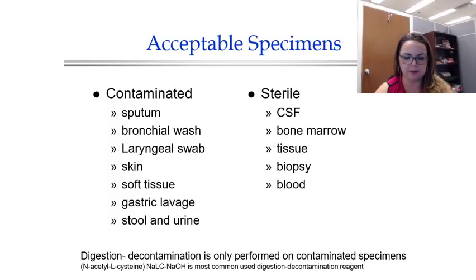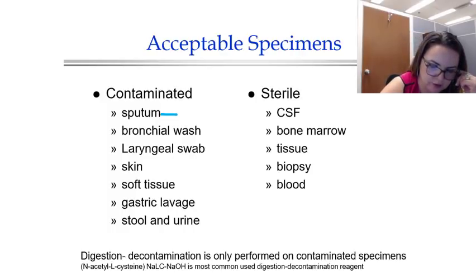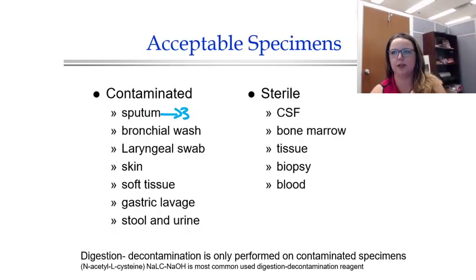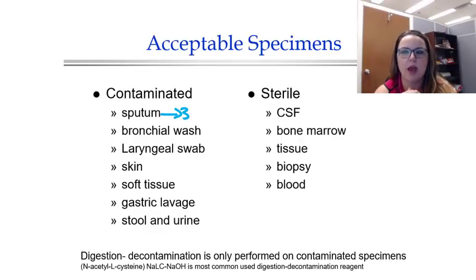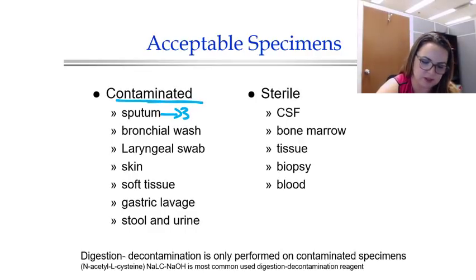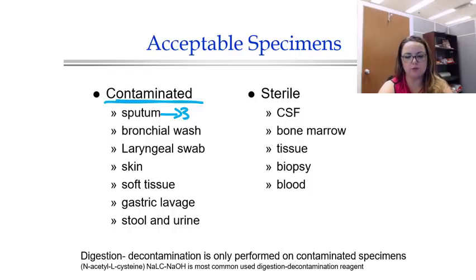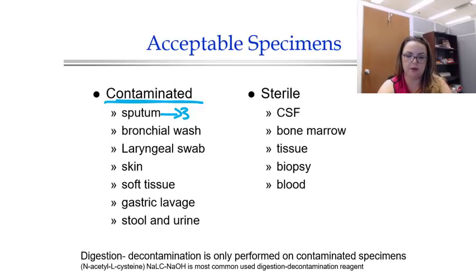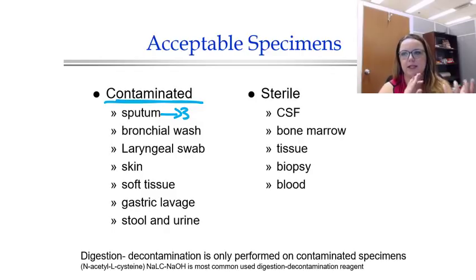Just one more note on acceptable specimens. Typically you'll ask for those three sputum samples, but you can't always control what you get. Other options include bronchial wash, laryngeal swab, skin, soft tissue, gastric lavage, stool, and urine. Some TB infections are extra-pulmonary — for example, if you have a skin infection like TB pedris, a sputum sample isn't going to help. If it's a contaminated source, you need to decontaminate it, and a great option for that is sodium hydroxide — a strong base that will remove most contaminants that can't survive like mycobacteria can with its unique mycolic acid cell wall.